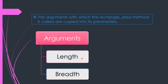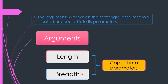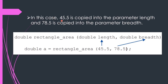As we discussed in the previous video, there is a term called parameters. Parameters act just like local variables inside a method. The values we provide for length and breadth as arguments will be copied into the corresponding parameters. So here 45.5 is provided for length and 78.5 is provided for breadth, and these values will be copied into their respective parameters.